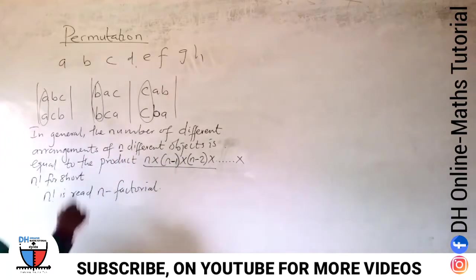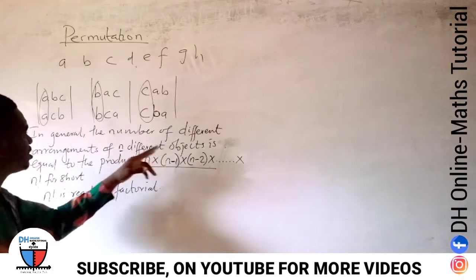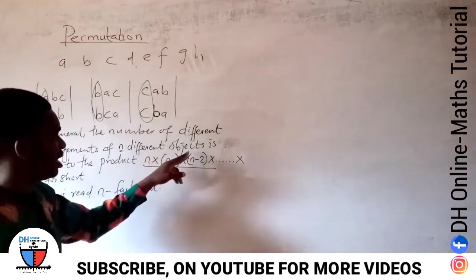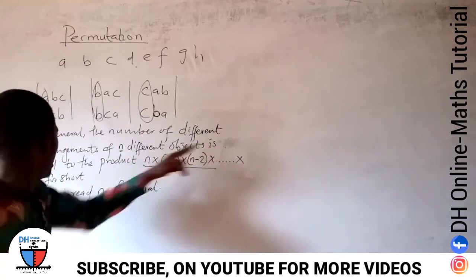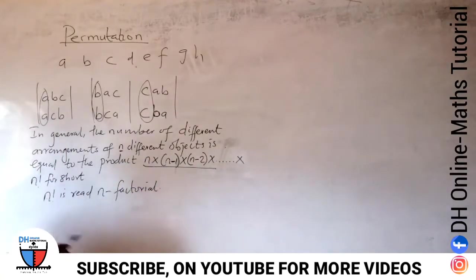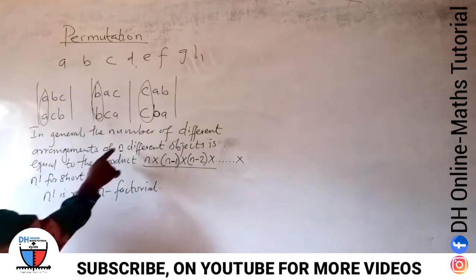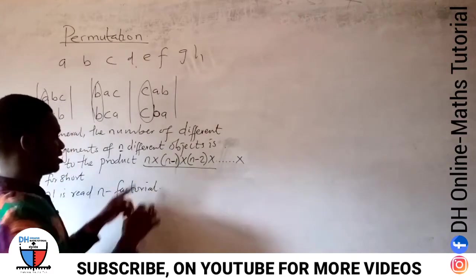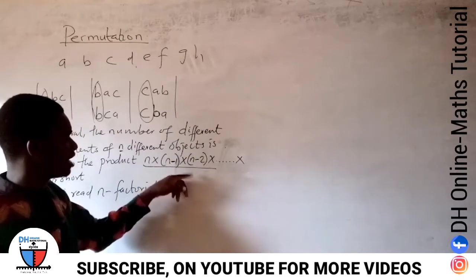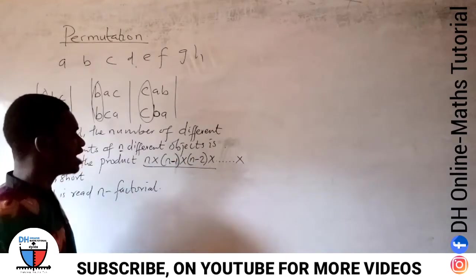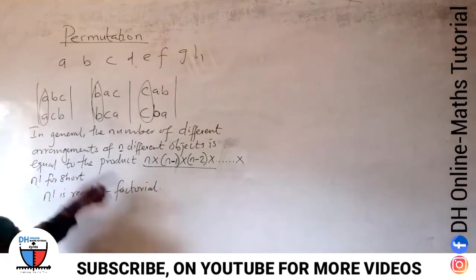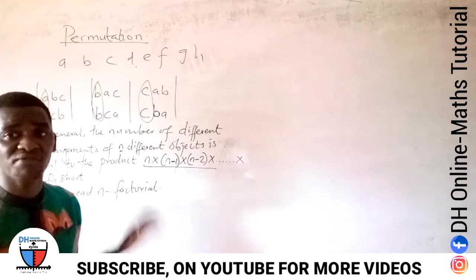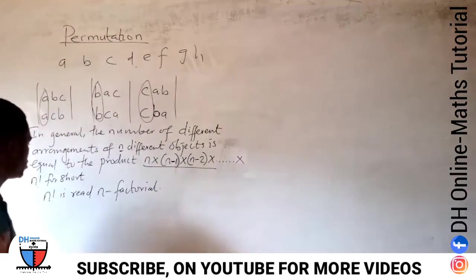In general, the number of different arrangements of n different objects is equal to the product: n times (n minus 1) times (n minus 2), and so on. This is the formula, and you will understand it better once we use it to solve questions.